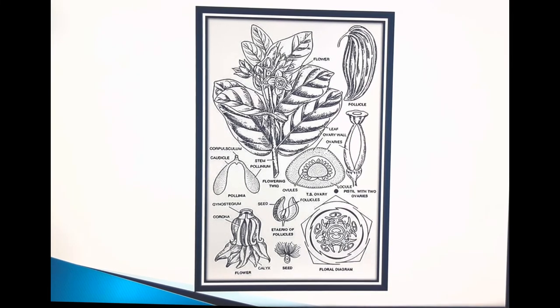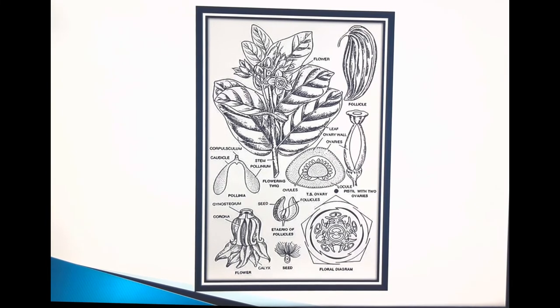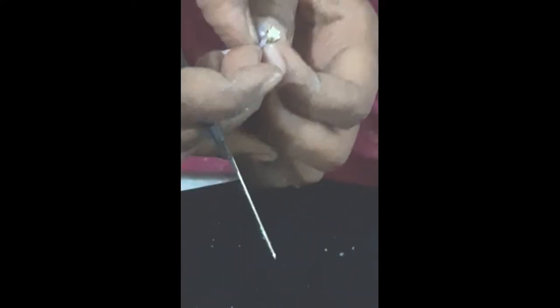Thank you, students. This is the entire complete topic of the Asclepiadaceae. In the next part, I will give a small and interesting video with a small demonstration — these are the corollary corona. This corolla is fused; these petals are fused with themselves. I will separate all the corollary corona from the flower.